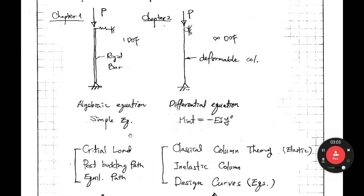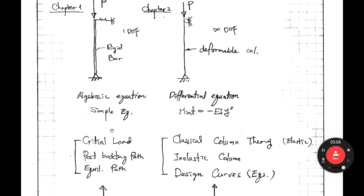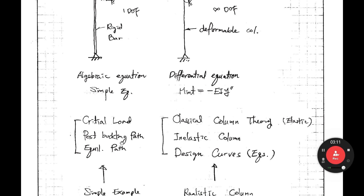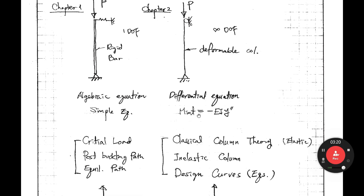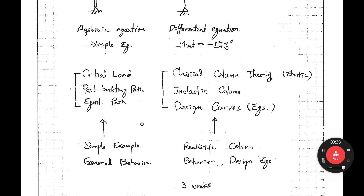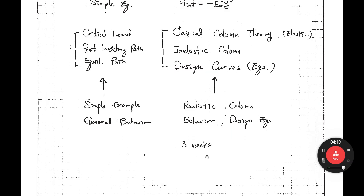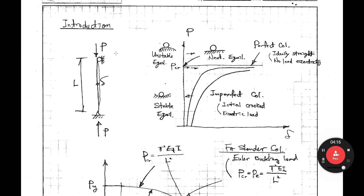In chapter one, we obtained the critical load and post-buckling path and equilibrium path. In chapter two, for the realistic column, we first consider classical column theory in the elastic range, then inelastic column behavior, and design curves. Chapter one assumed a simple problem to give a general idea of behavior; chapter two covers realistic column behavior and design equations. We spend three weeks to cover chapter two.